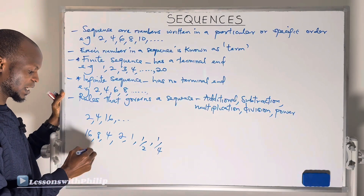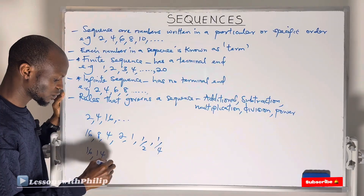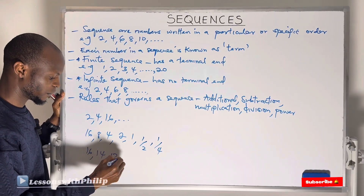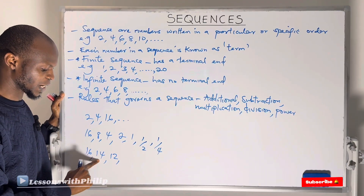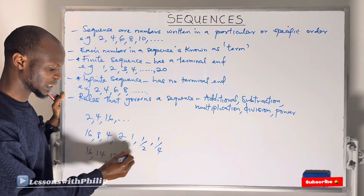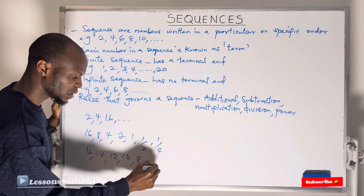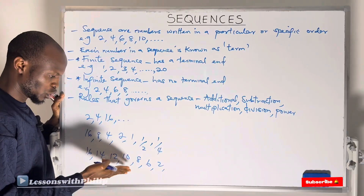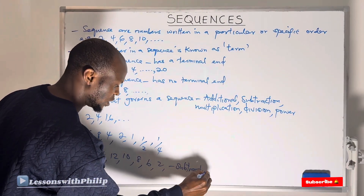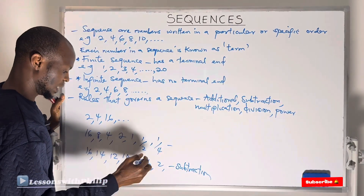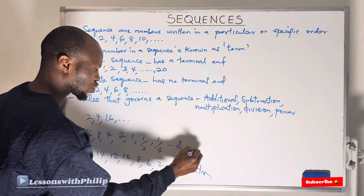If I have the sequence 16, 14, 12, and I want to find the fourth term — that shows I am subtracting 2 from each term. So the next one will be 10, then 8, then 6, and so on. The rule here is the subtraction rule. The rule in the sequence 16, 8, 4, 2, 1 is the division rule.